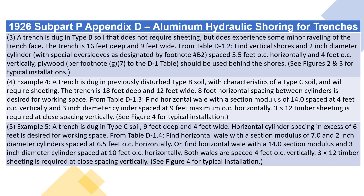Example 4: A trench is dug in previously disturbed type B soil with characteristics of a type C soil, and will require sheeting. The trench is 18 feet deep and 12 feet wide. 8-foot horizontal spacing between cylinders is desired for working space. From Table D1.3, find a horizontal whale with a section modulus of 14.0, spaced at 4 feet O.C. vertically, and a 3-inch diameter cylinder spaced at 9 feet maximum O.C. horizontally. 3-by-12 timber sheeting is required at close spacing vertically. See figure 4 for typical installation.